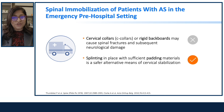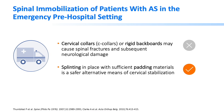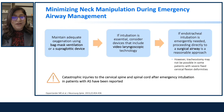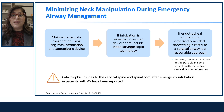Spinal immobilization of AS patients in emergency pre-hospital settings is critical. These patients should not be treated the same as those without AS. Cervical collars or rigid backboards may cause spinal fractures and subsequently lead to neurological damage. Splinting in place with sufficient padding materials is a safer alternative means of cervical immobilization. Minimizing neck manipulation during emergency airway management is essential, even when devices are limited.